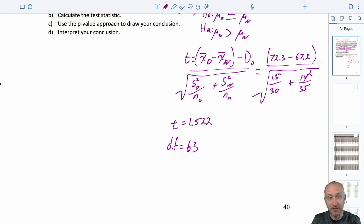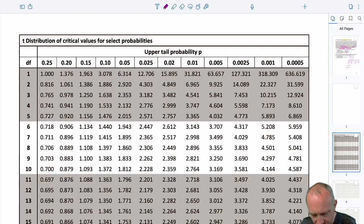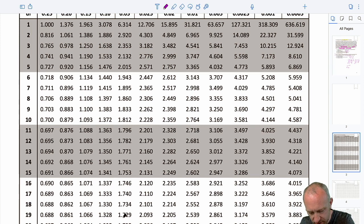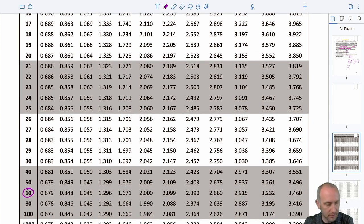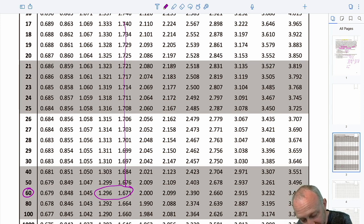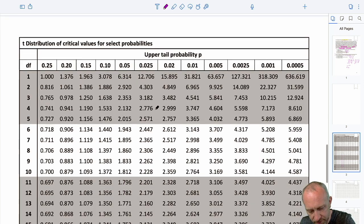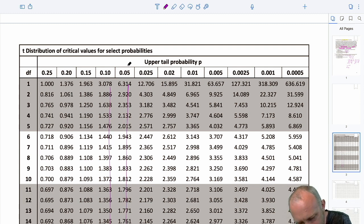So I have my test statistic. I have my degrees of freedom. Now we're going to use the p-value approach to draw our conclusion. So I have a t-distribution with 63 degrees of freedom. If I come down here, we're going to have to approximate. We often do when we're using these tables. So I'm going to round that to 60 degrees of freedom. My test statistic was 1.52. And so I'm just here between these values. So I'm going to follow those up all the way to the top. And there I have my relevant probabilities.